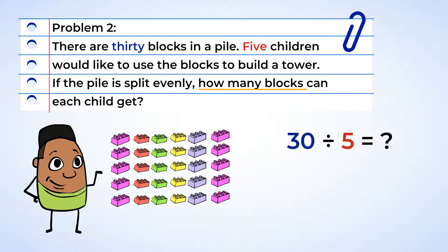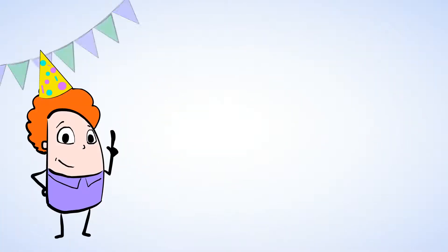You can create the division equation 30 divided by 5. Or you can think 5 times what is 30? Whichever way you thought about the problem, you found that the answer is 6. Each child will have 6 blocks to build with.